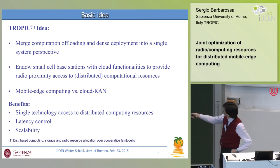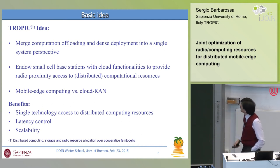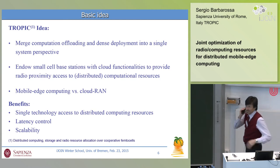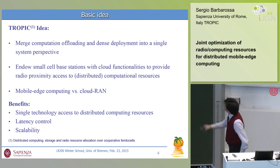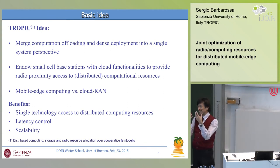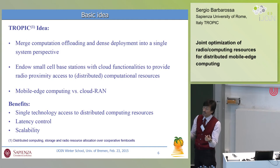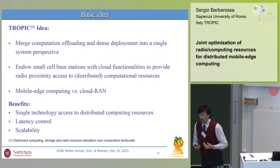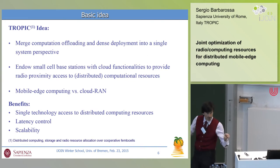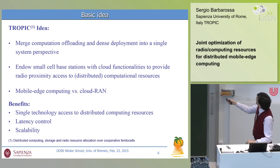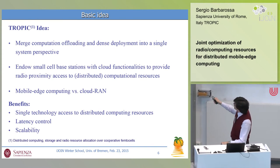Tropic stands for Distributed Computing, Storage, and Radio Resource Allocation over Cooperative Femtocells — it has little to do with the acronym, just a few consonants and vowels. The major idea is quite simple: we want to merge into a single holistic perspective the dense deployment of base stations and computational offloading by endowing small cell base stations with cloud functionalities — the capability to run virtual machines able to serve users.